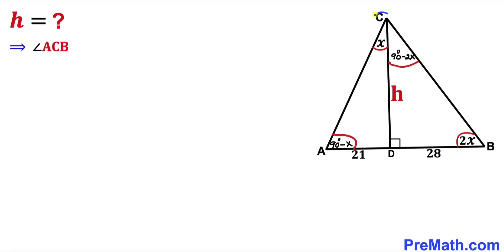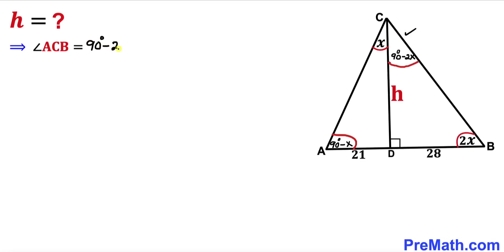Now let's focus on this whole angle ACB. This is equal to the sum of these two individual angles. So I can write angle ACB as (90 degrees minus 2x) plus x. Let's go ahead and combine like terms — that gives us 90 degrees minus x.